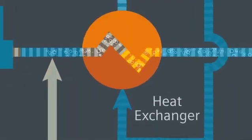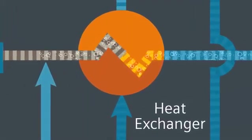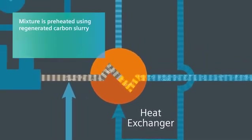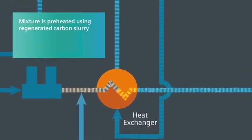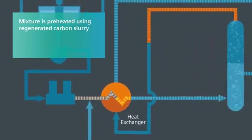This mixture is then routed to the heat exchanger. The mixture is preheated at the heat exchanger, using heat transfer from the hot, regenerated carbon slurry.